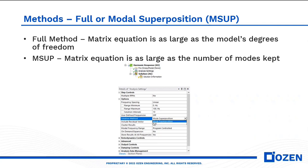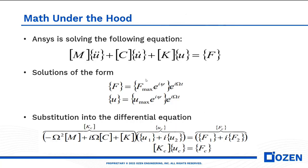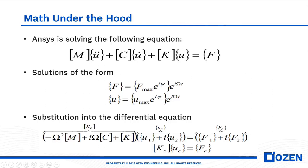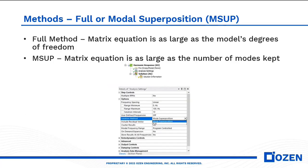For harmonic response, you actually have two methods with which to proceed: the full method or the modal superposition method. The full method means the matrix has as many terms as you have degrees of freedom in your mesh, so with lots of nodes it might take a very long time to solve. For the modal superposition method, the dimension of the matrix and vectors depends on how many modes you keep. Sometimes you can get away with only a few modes and get say 90% of the result, which is good — we want simulations that run fast.